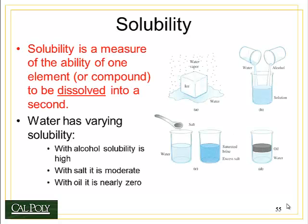First, a bit about solutions. There's a concept called solubility, which is a measure of how easily one element or compound can be dissolved into a second. Water and alcohol dissolve each other completely. Salt also dissolves into water, but it has a limit — at the solubility limit, you cannot dissolve any more salt into the water. Oil and water are immiscible, meaning they cannot be dissolved in each other; they form a mixture, not a solution. So there are three possible options when mixing two elements: a perfect solution, a partial solution, and a mixture.